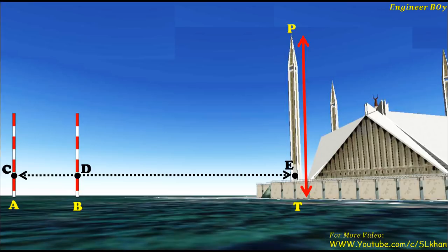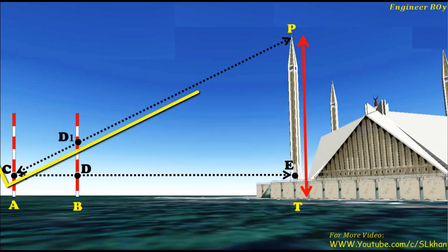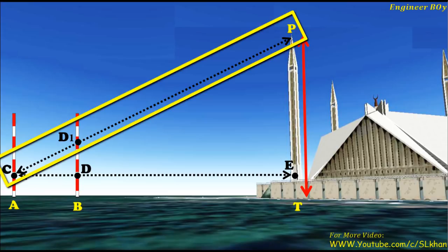After this we will sight the peak of the tower from point C so we can mark a point D1 on ranging rod at point B. Make sure C, D1, and point P are in the same straight line.